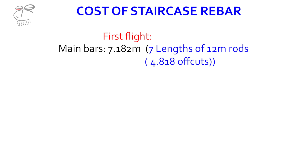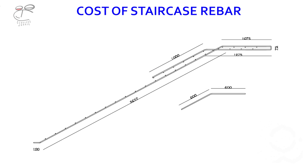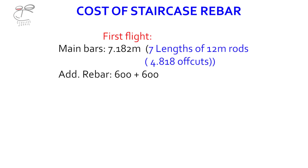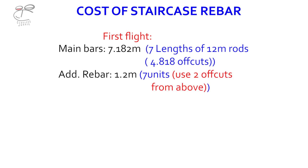So seven lengths of 12-meter rod with a 4.81-meter off cut. For the additional rebar, that's 600 millimeters plus 600 millimeters, which is about 1.2 meters. We use two off cuts from the above — that's from the 4.818.